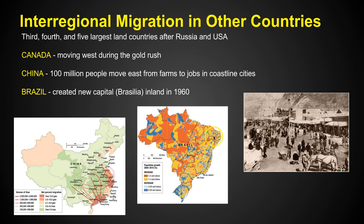In Brazil, it's pretty interesting and different. They had so much population along the eastern seaboard — some of the largest cities in the world are São Paulo and Rio de Janeiro. There was so much population that they needed more space, so they created the capital of Brasília in the middle of their country, in the middle of the jungle, in 1960. We've seen changes in migration patterns moving inward, and the largest population growth today is shown in orange in the middle of the country.